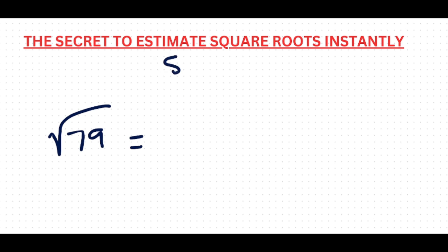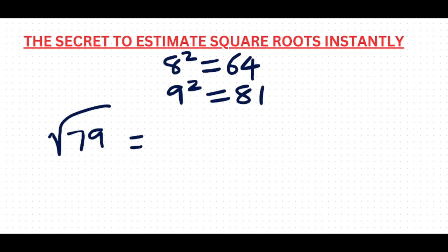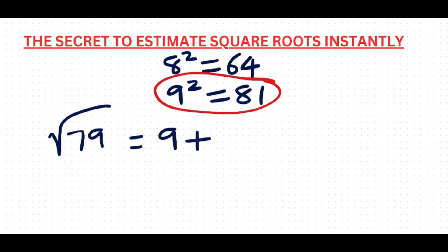To find the square root of 79, you need to find the nearest perfect squares. Let's write them down: 8 squared is 64, and 9 squared is 81. Which is the perfect square nearest to 79? Yes, it's 81. Now the square root of 81 is 9, so you write 9, then plus a fraction.